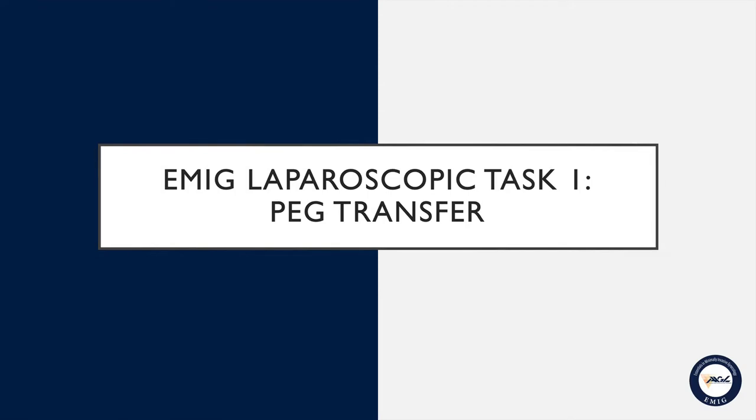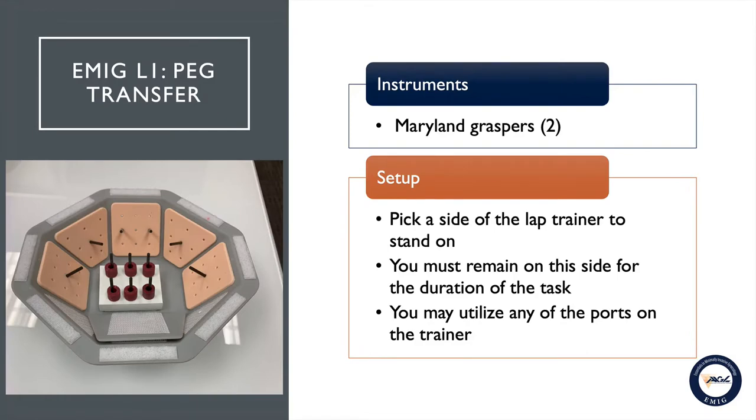EMIG Task Number One: Peg Transfer. For this task, you will be provided with two Maryland graspers. You are required to pick a side of the lap trainer to stand on. You must remain on this side for the duration of the task. You may utilize any of the ports on the trainer to perform this task.